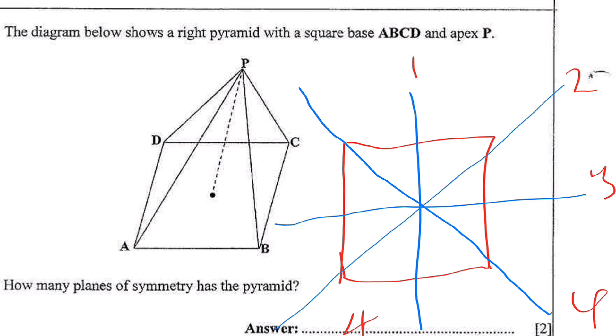Simple, right? This is very simple. You use the base to come up with the number of planes of symmetry. You use the base here so it's easy to find the planes of symmetry.